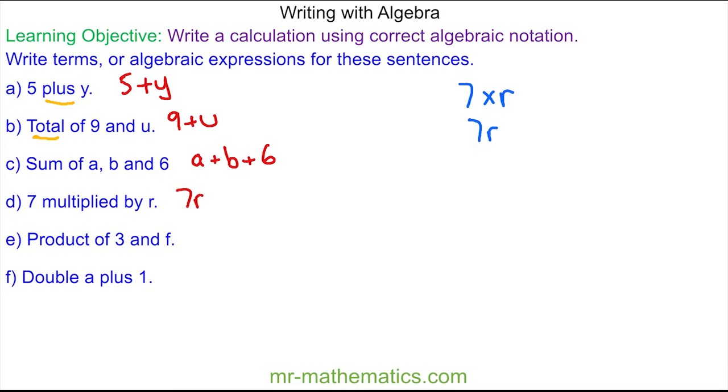For equation e, the keyword now is product, and product means multiplication, so we have 3 multiplied by f. Again, we drop the multiplication symbol, so we have 3f. For question f, the keyword now is double and plus.